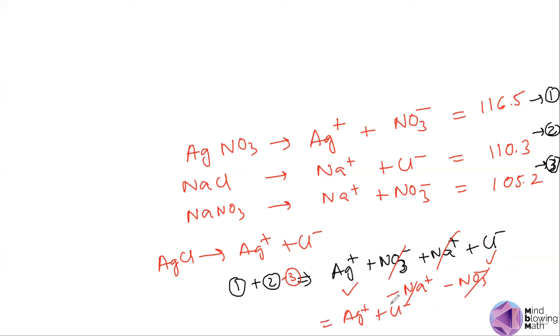So equation 1 plus 2 minus 3 gives us the result. We calculate: 116.5 plus 110.3 minus 105.2, which equals 121.6. So option A is correct. Next video I will solve another problem for you.